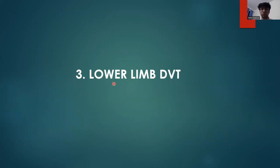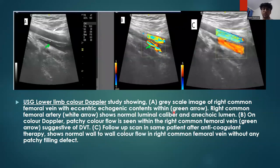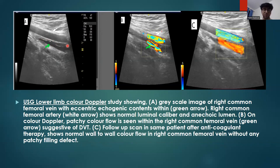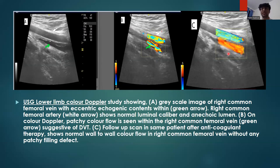The third extrapulmonary post-COVID complication was lower limb DVT. The grayscale image shows the right common femoral vein with eccentric echogenic contents visible, while the common femoral artery shows a normal lumen. On color Doppler, the artery shows normal flow, while the vein shows patchy flow suggestive of re-canalization. A follow-up scan of the same patient after anticoagulant therapy demonstrates normal wall-to-wall color flow in the right common femoral vein, with normal wall-to-wall compressibility and augmentation on distal compression.